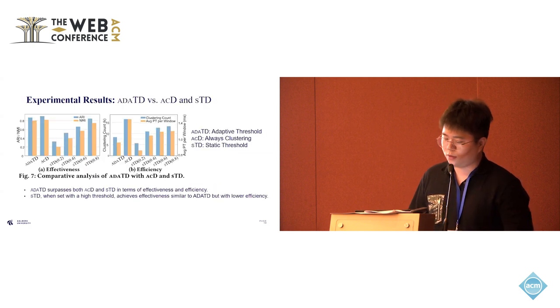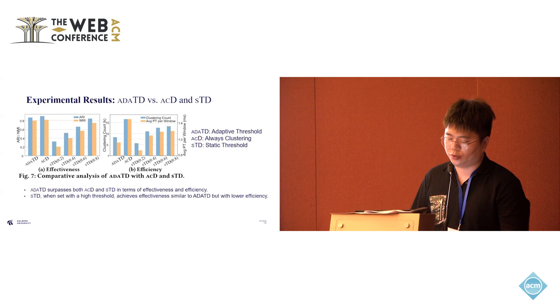We also compared the adaptive threshold detection with two methods. We used the standard threshold, ACD (Always Clustering Detection), which conducts clustering for every sample, and STD (Static Threshold Detection), which uses a static threshold to check if clustering should be conducted. The experimental results show that adaptive threshold detection achieves a balance between accuracy and computational overheads, making it the best choice for streaming state detection.